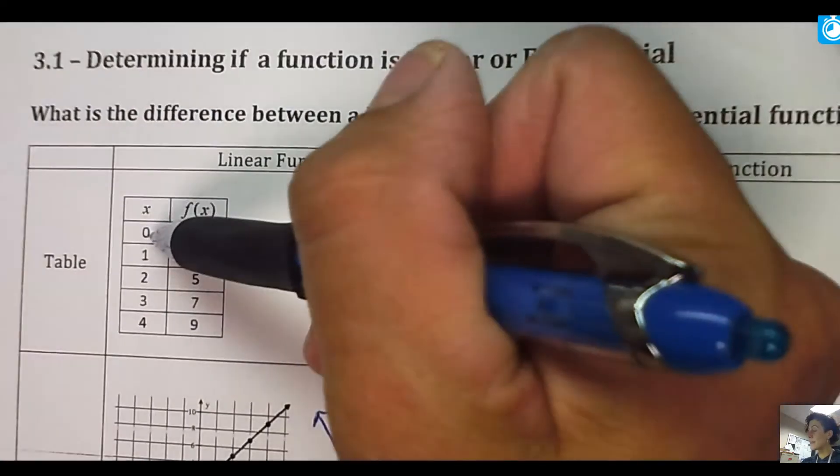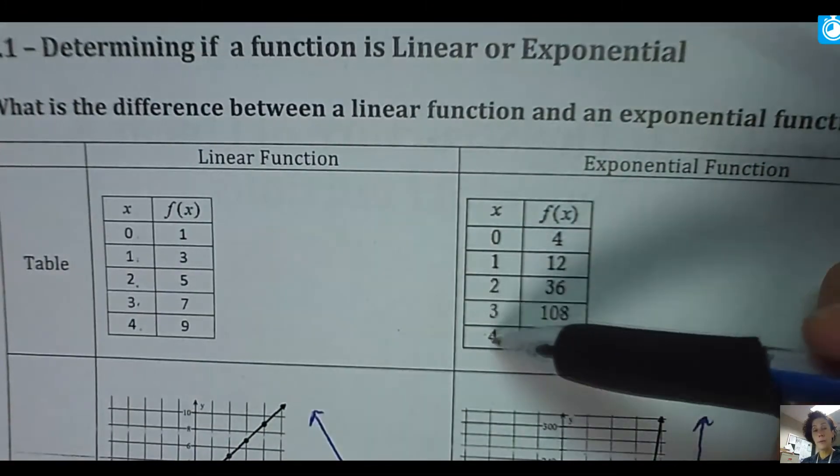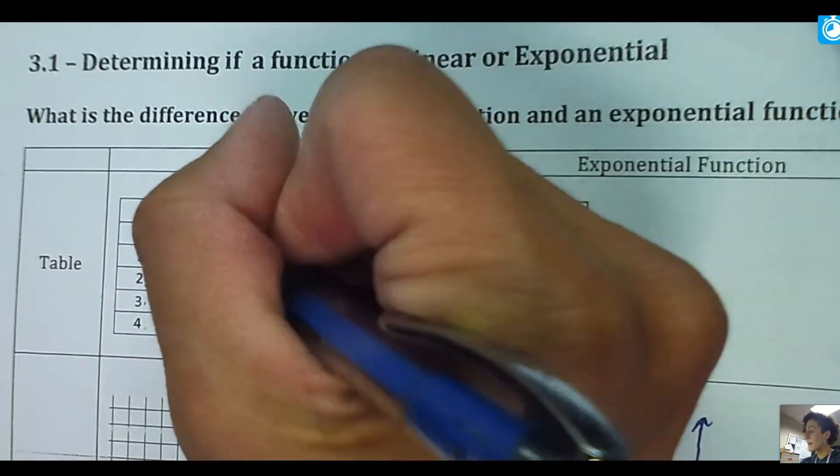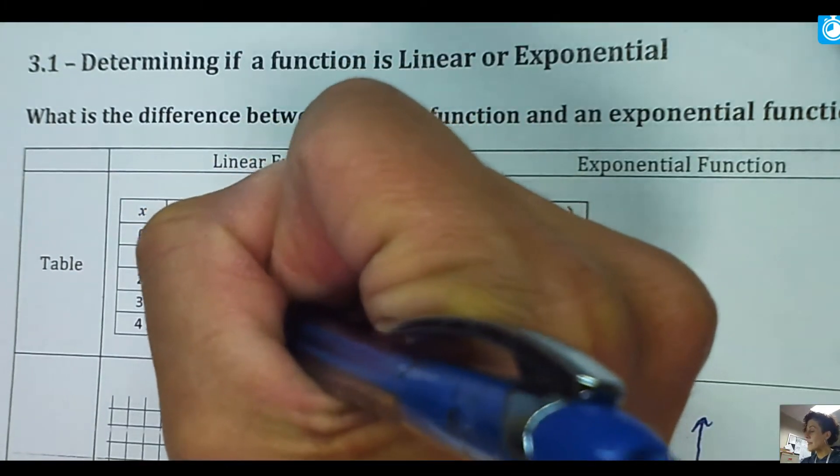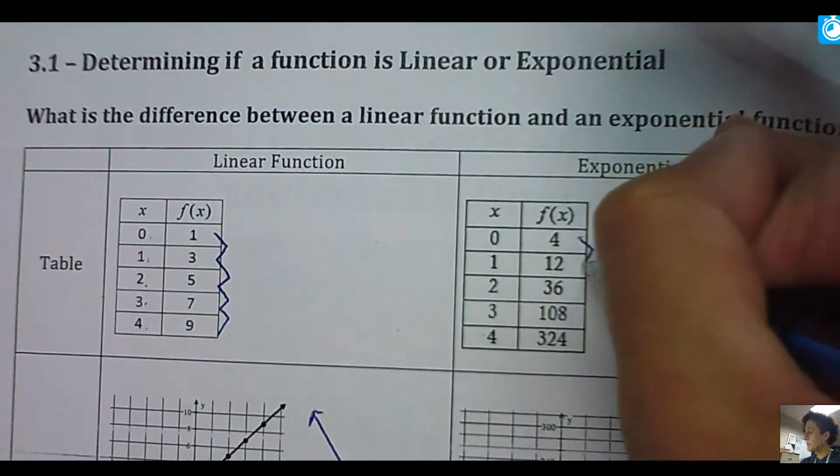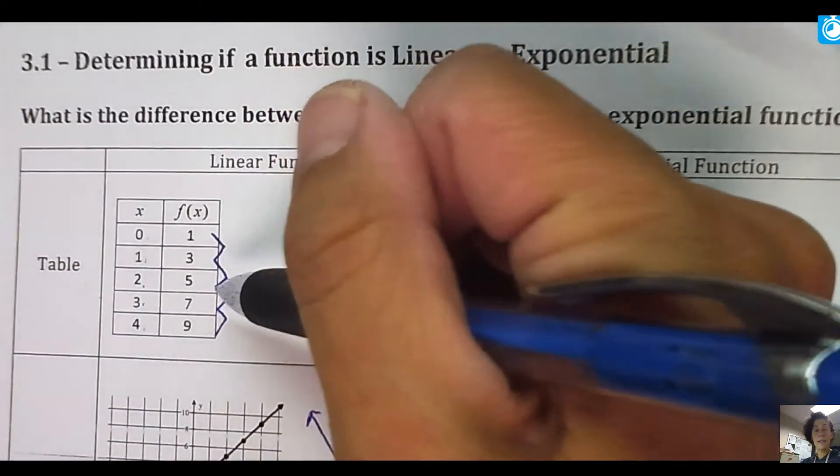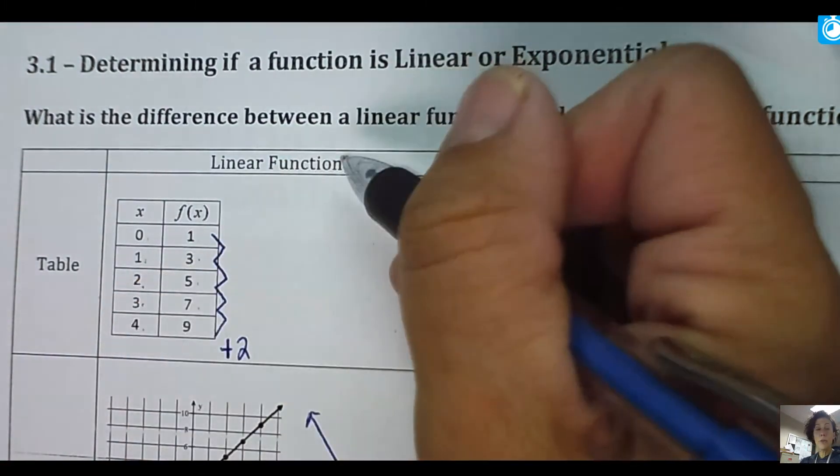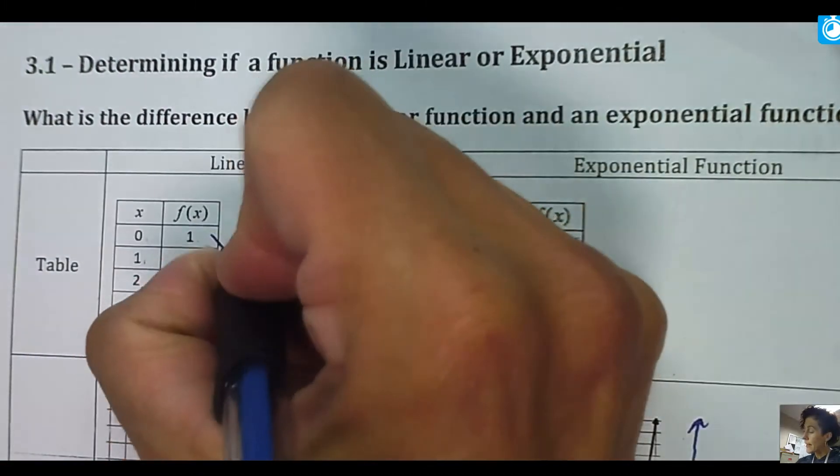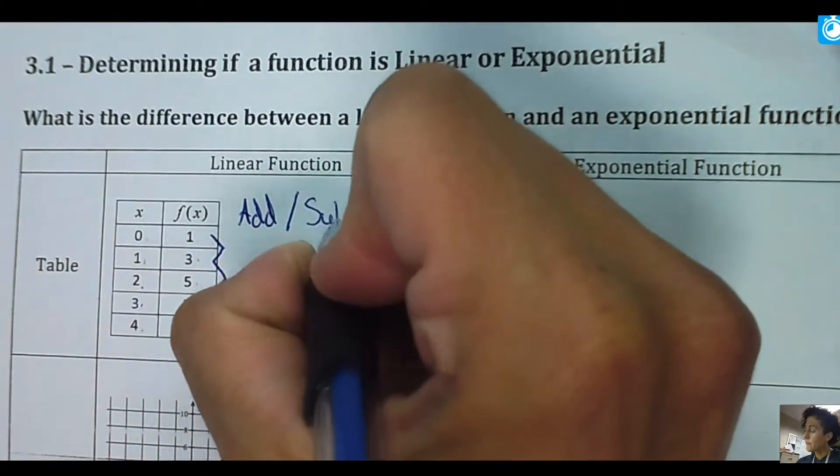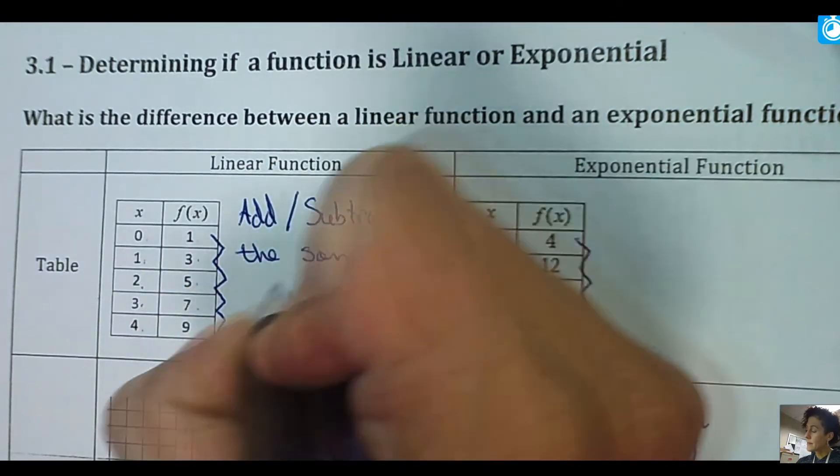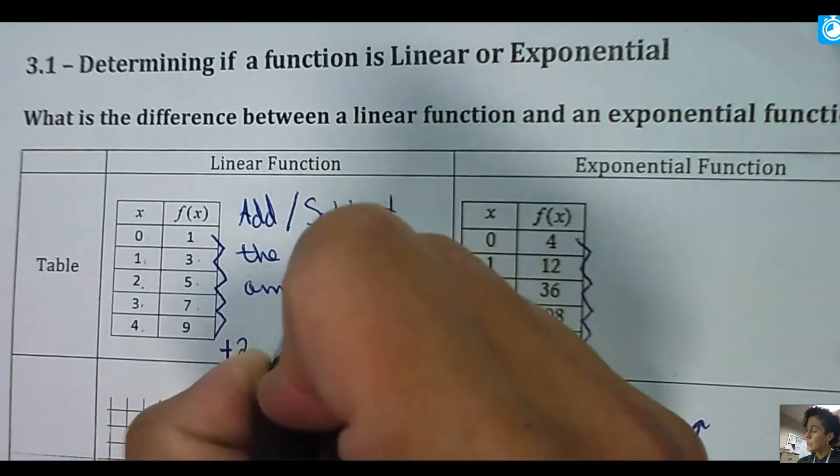In a table, you want to look at the Y values. The only way this is possible is if your X values are going up by one. So if you see the pattern of your X values going up by one, which they will for us in our chapter, you want to focus on the Y values and see how they're changing. Since this is increasing, I look to see if it's adding or multiplying. And this one is adding. It's adding two every time. So I'm going to make a note of that. You will know if it's a linear function if they add or subtract the same amount each time.